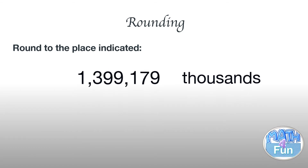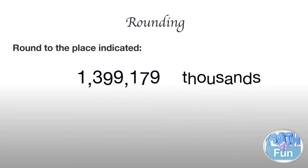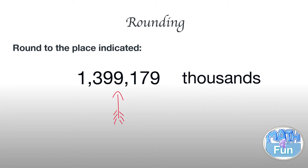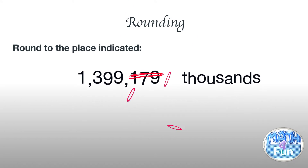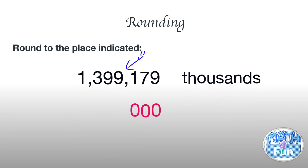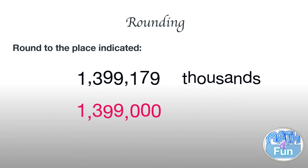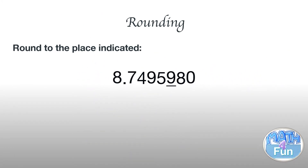Here we have 1,399,179 and they want you to round it to the nearest thousands. The thousands place is 9. We look to the right and we have 1 — it's not 5 or more — so we make those digits zero and we don't add anything to the 9. The number becomes 1,399,000.